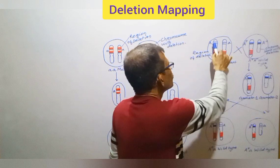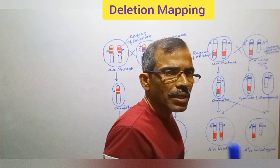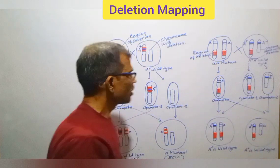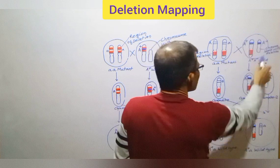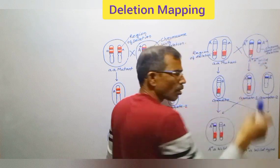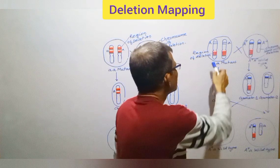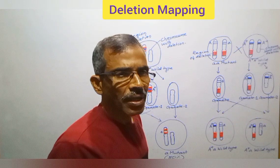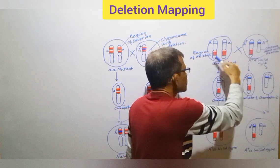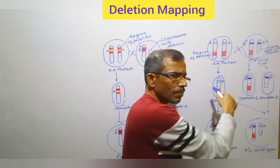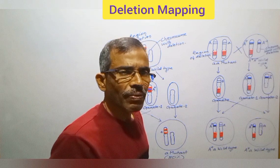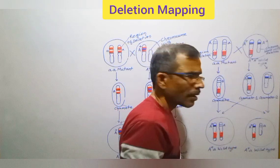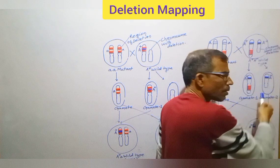Here also, an individual homozygous for the same recessive mutation is crossed with an individual heterozygous for the deletion. But the difference between these two is that in this case, the gene of interest is not within the deletion region. You see here, this is the region of deletion which is outside the gene of interest. At the time of gametogenesis, the homozygous recessive parent will form only one type of gamete. This is due to the fact that both the chromosomes of the homologous pair have the mutated allele.